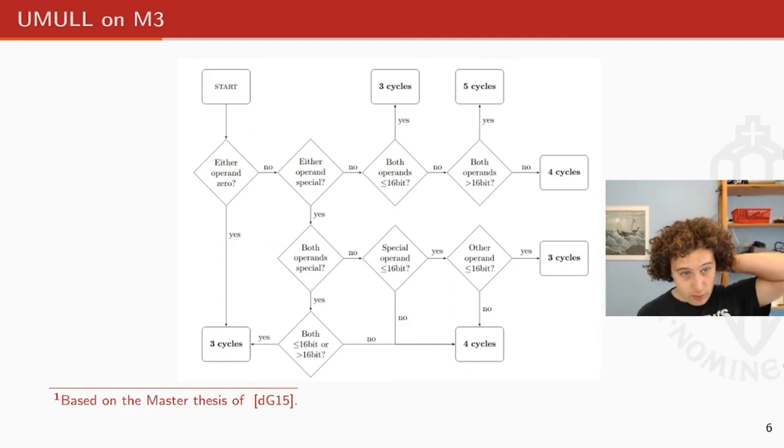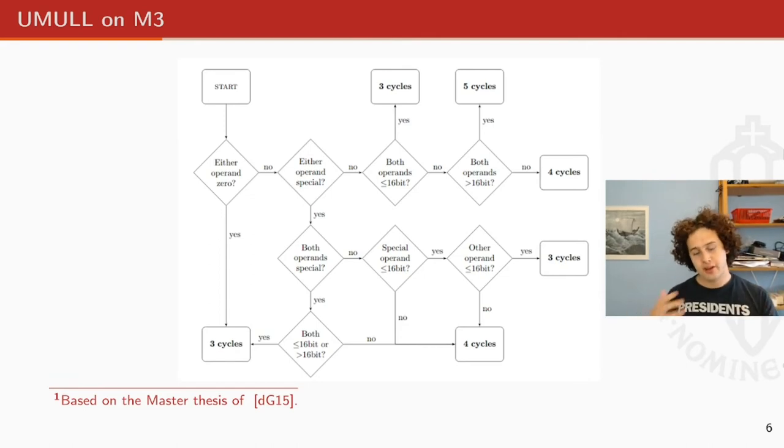How does that look? Well, we thought about maybe we can trick this instruction into doing all this stuff correctly. But apparently, the flowchart for these instructions, for example, for this one, is so involved that it's really hard to actually trick this. And if we want to make sure that we always end up, for example, in the five-cycle path, then it's almost impossible to properly implement crypto with this.